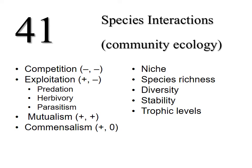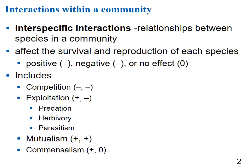Chapter 41 looks at how species interact with each other — community ecology. Interspecific interactions are relationships between species in a community that affect the survival and reproduction of each species. We can classify interactions as positive, negative, or neutral. This includes competition, exploitation — which includes predation, herbivory, and parasitism — as well as mutualism and commensalism.